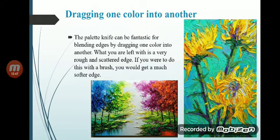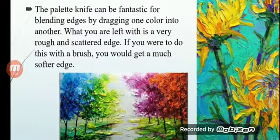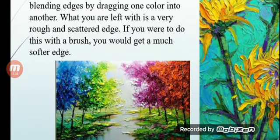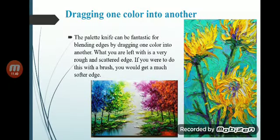The next technique is dragging one color into another. The palette knife can be fantastic for blending by dragging one color into another. What you are left with is a very rough and scattered edge. If you were to do this with a brush, you would get a much softer edge. As you can see in the image, the sunflowers are made with this rough, scattered edge effect. With a brush this would require a lot of effort, but with the palette knife it can be done easily.